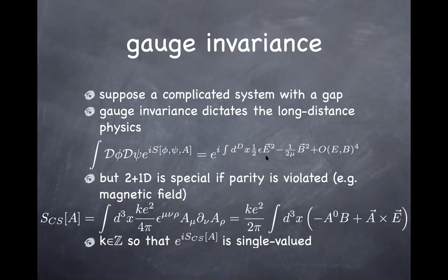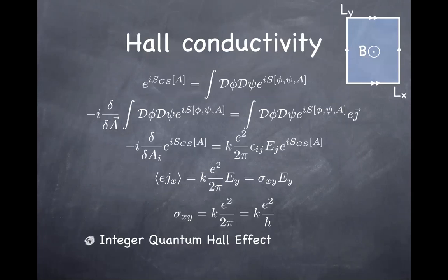Student: So the Chern-Simons action is the only gauge-invariant action relevant for long distances? Yes — that's the only dimension-3 term one can write in terms of the gauge fields. Any other questions?